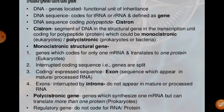Monocistronic genes are found especially in eukaryotes. On the other hand, polycistronic genes are found in bacteria, especially in prokaryotes. In polycistronic conditions, many cistrons are present. In eukaryotes, only monocistronic genes are present, while in prokaryotes there can be more than two or three segments of cistrons found.